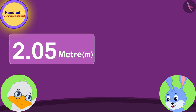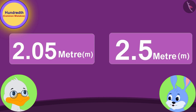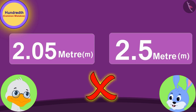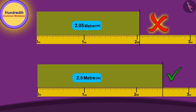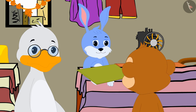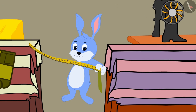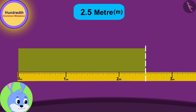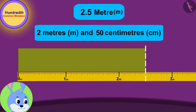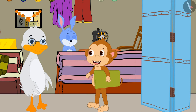Uncle explained it well. Bunny said: "Now I understand, Uncle, that 2.05 meters and 2.5 meters are not equal. I accidentally gave Babban cloth of the wrong length." Bunny immediately took back the cloth from Babban and this time measured 2.5 meters, or 2 meters and 50 centimeters, of cloth using the tape, cut it, and gave it to Babban.